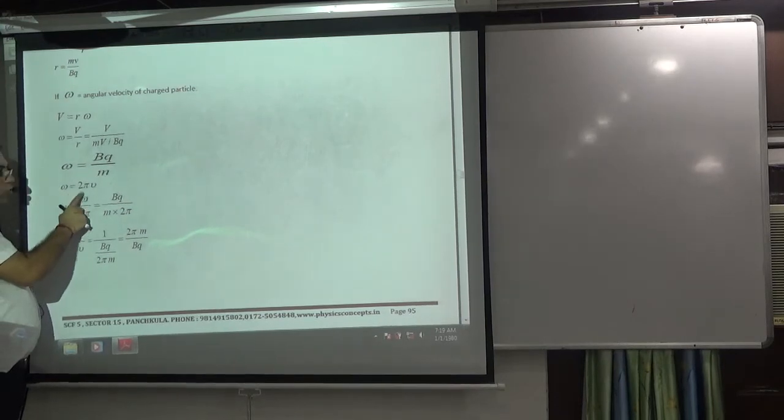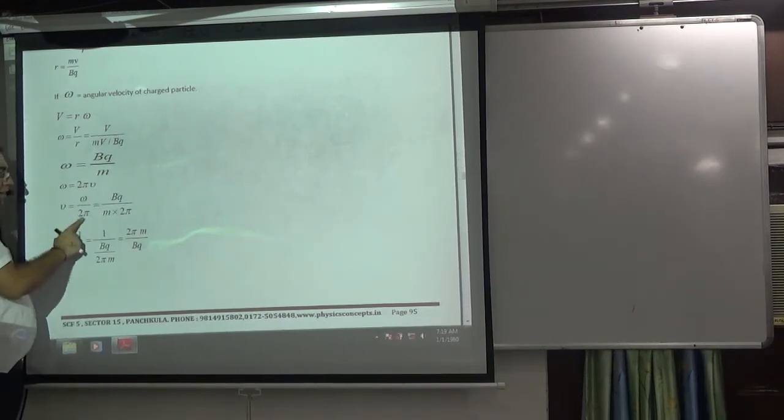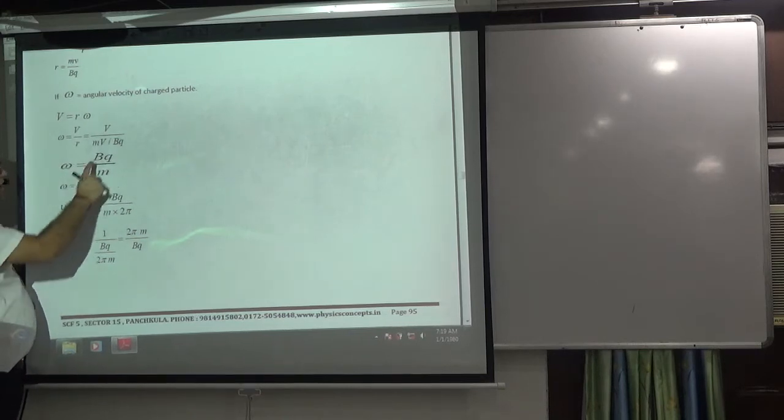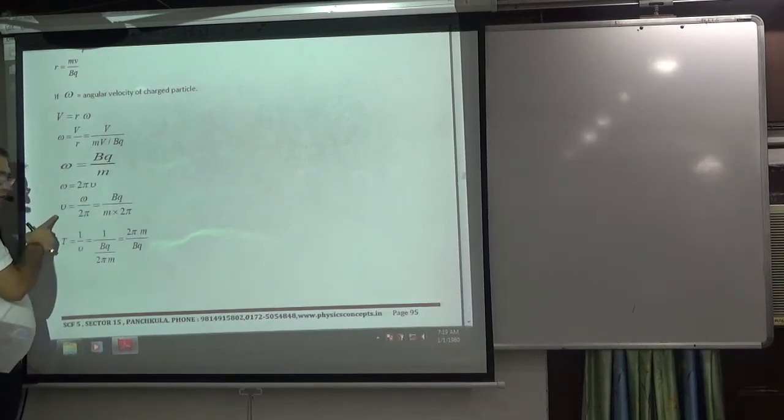Omega is equal to 2π times frequency. What will it be? Omega divided by 2π. Omega's value is bq by 2m. What will it be? Frequency.